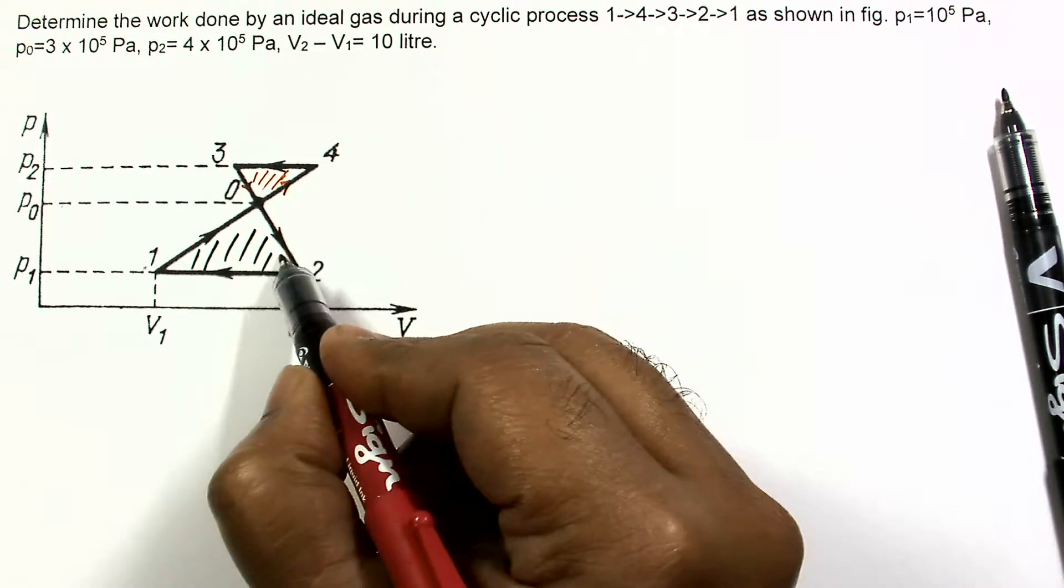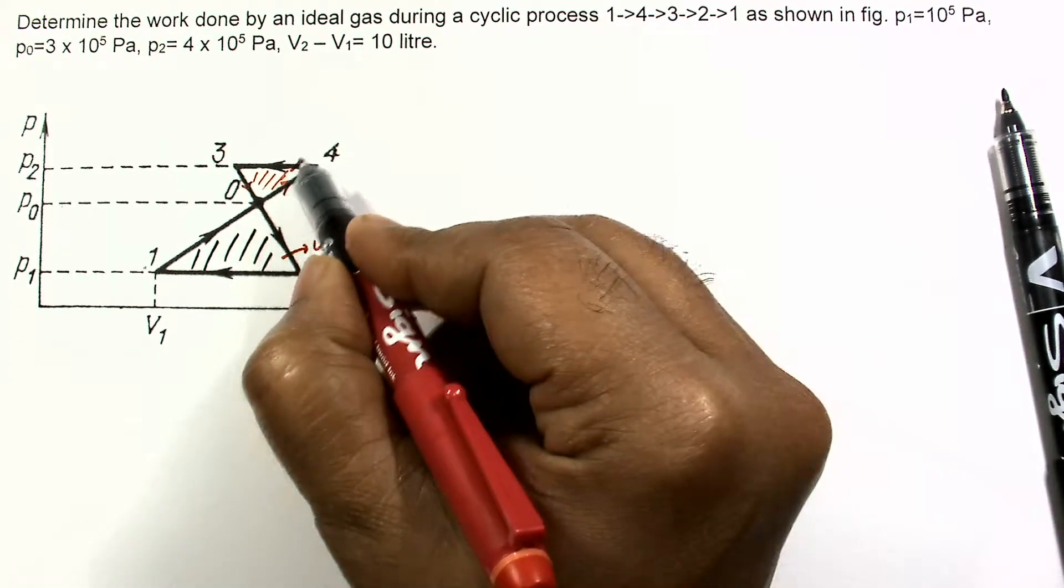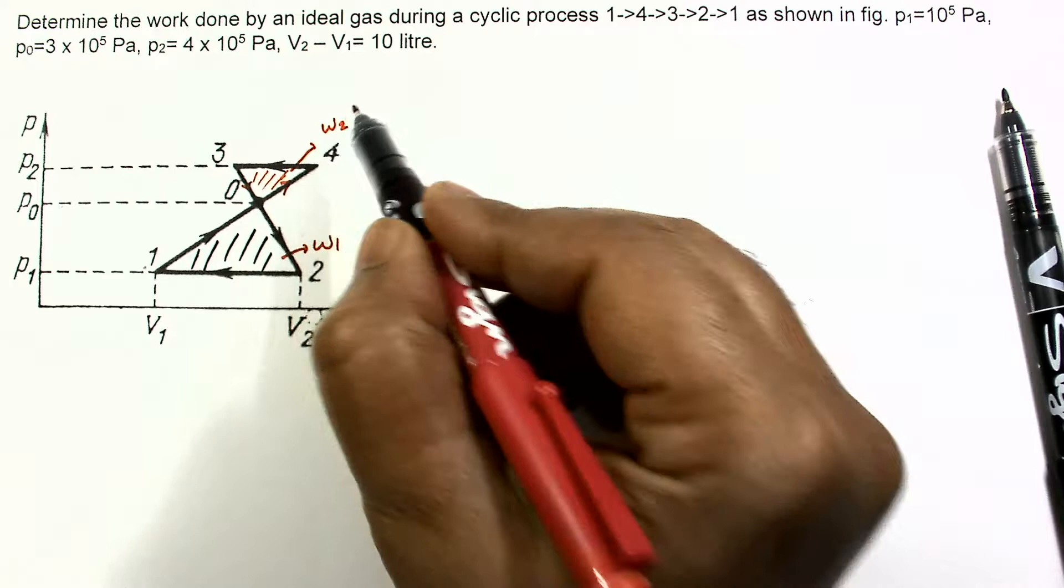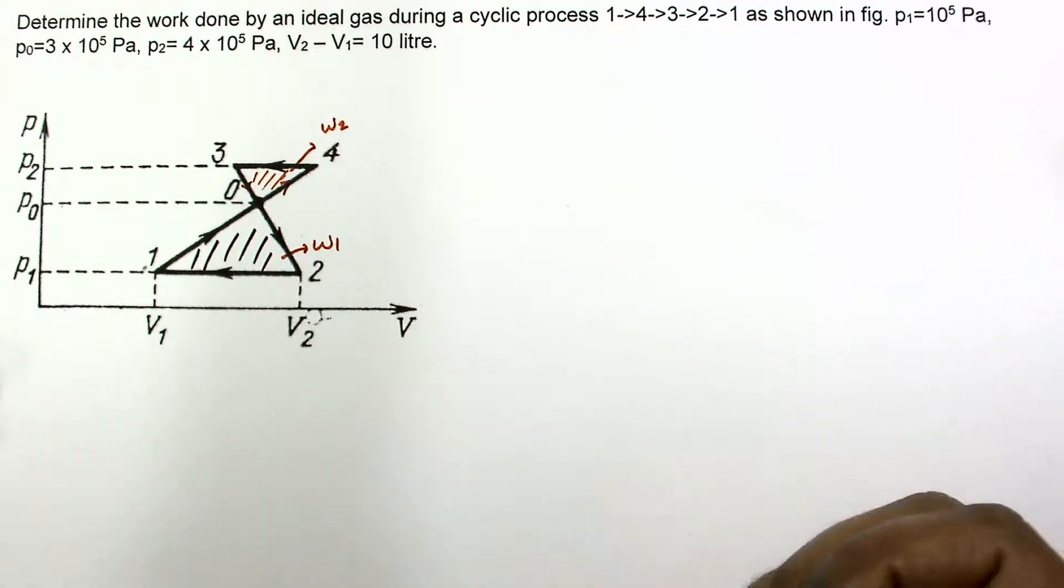So we will calculate the work done associated with this loop and work done associated with this loop by calculating the areas. We will calculate the areas and the work done will be calculated.